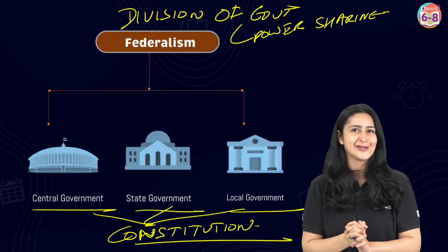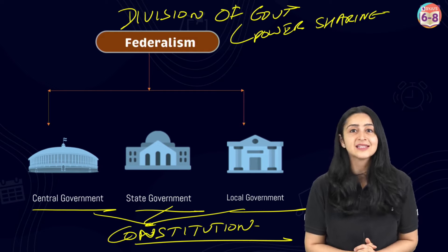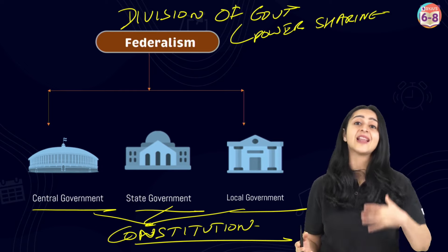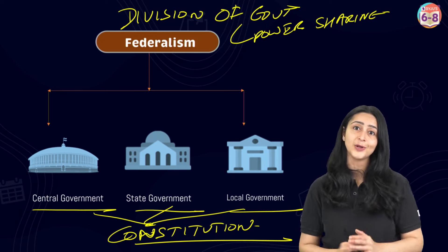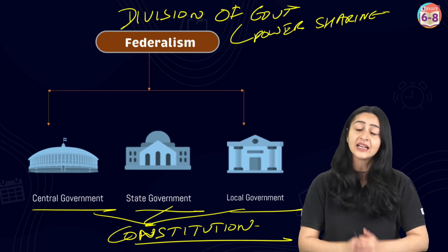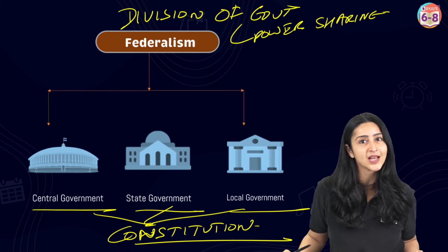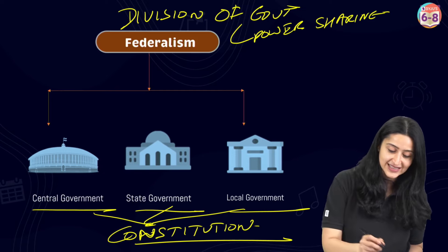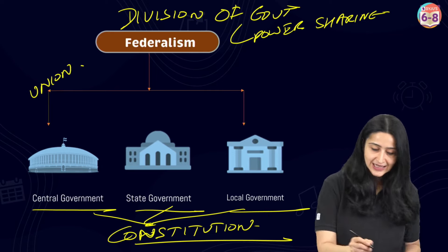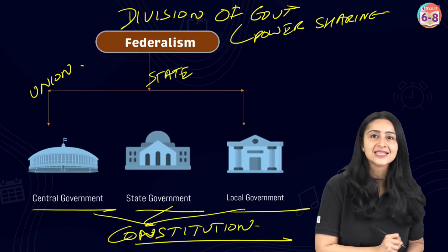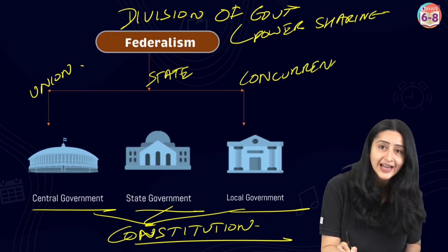There is a small catch, however. In India, the central government is more powerful than the state or local government. So on questions of national concern, the state and local governments do need to follow the laws framed by the central government. To facilitate this, the constitution provides three lists. There is the union list for matters of the country, the state list for matters of the state, and the concurrent list which has matters related to both.